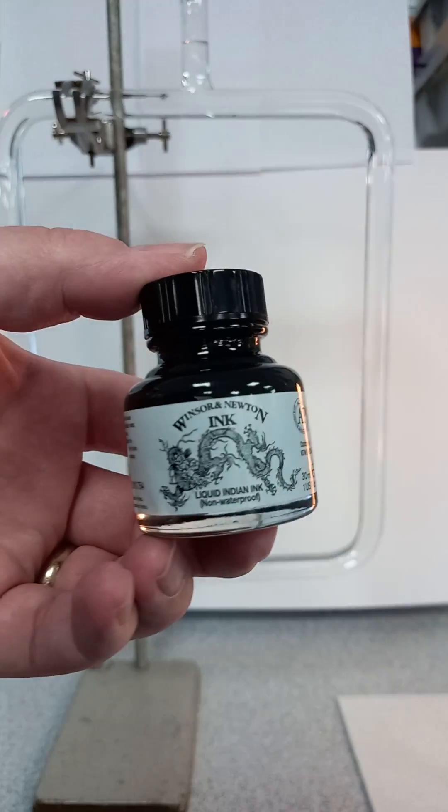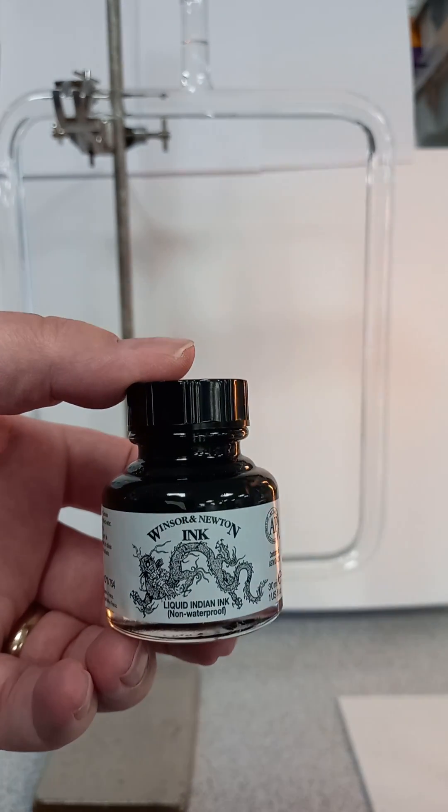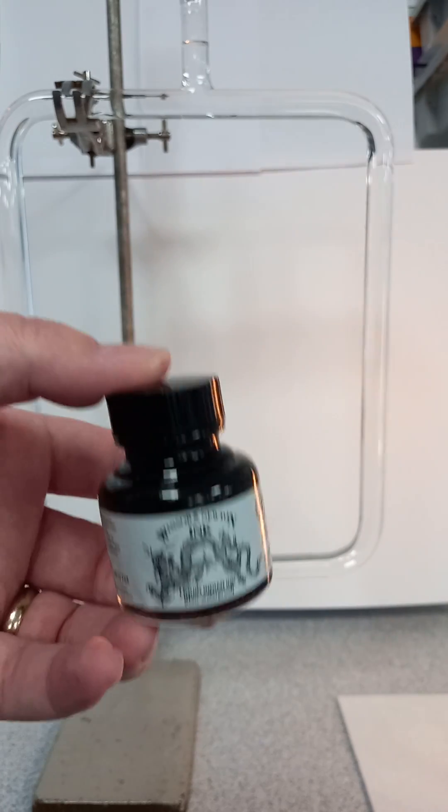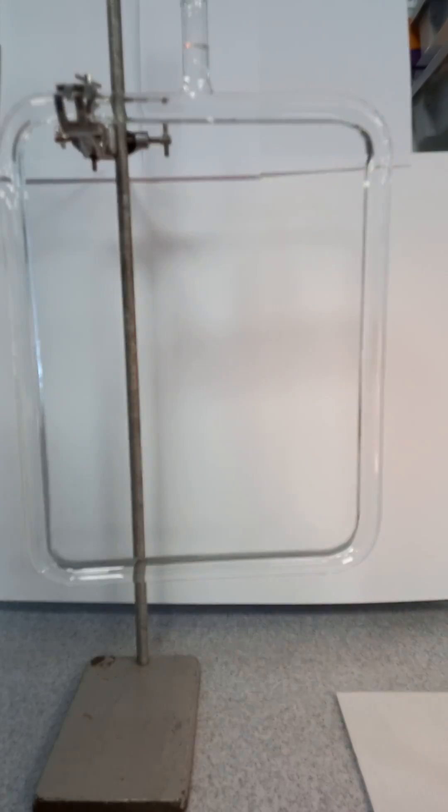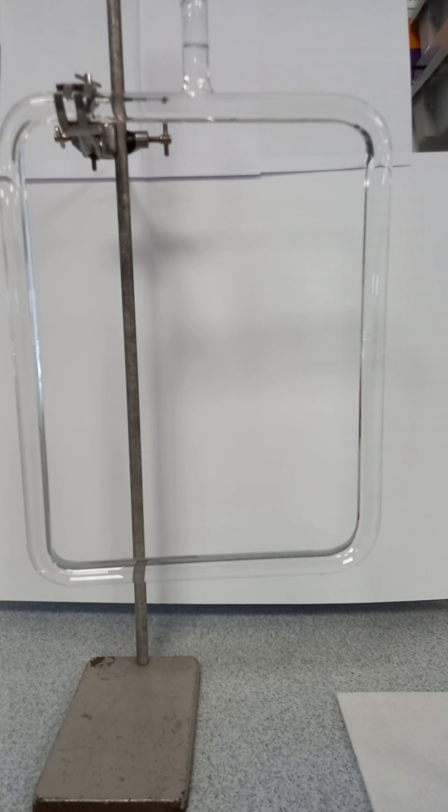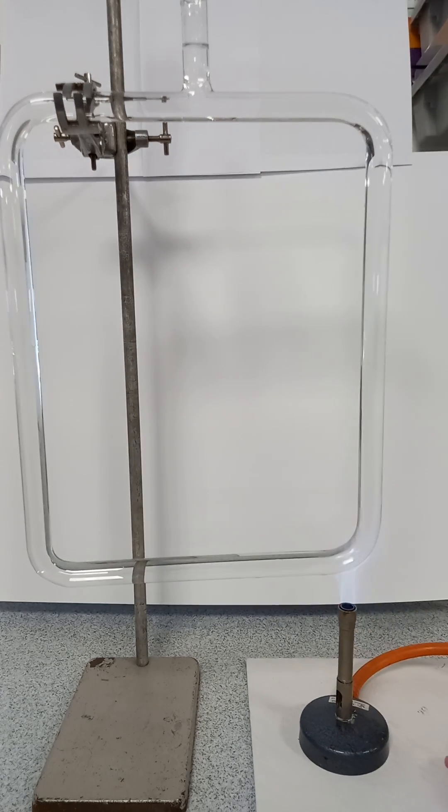So I read on a forum recently you could use Indian ink, and the recommended dilution was five parts water to one part Indian ink. So that's pure Indian ink, but let's just have a look at five parts water to one part Indian ink. I'm just going to put the flame on and stick it where it needs to be.